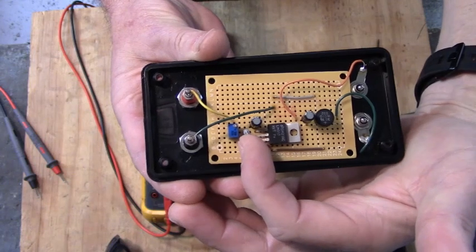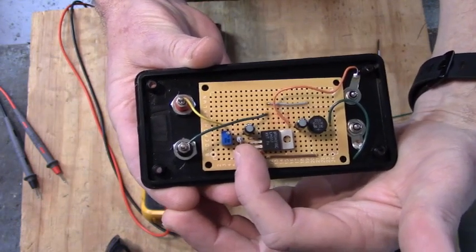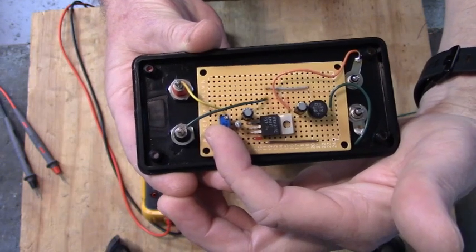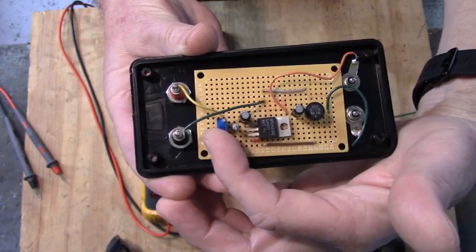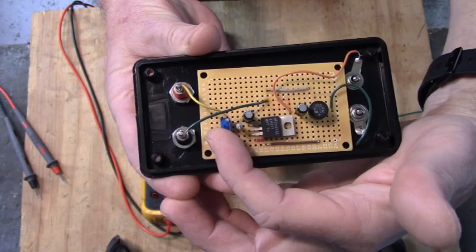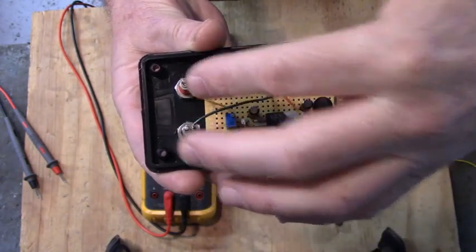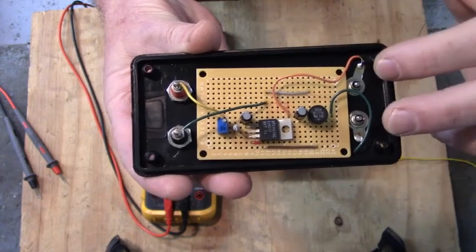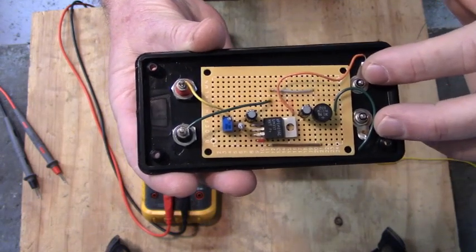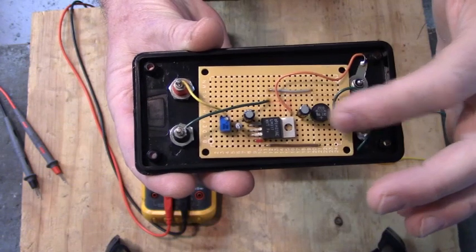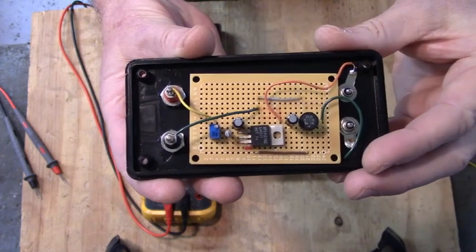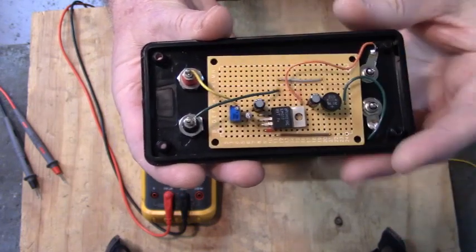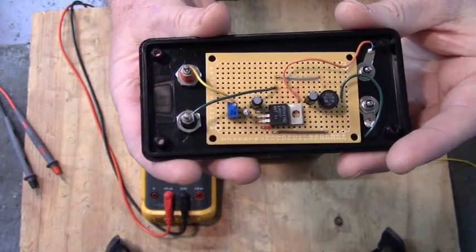Here's the 18 ohm resistor. Here's the 50 ohm multi-turn potentiometer that we're going to use to calibrate the current at the output terminals to 100 milliamps. Over here's the input terminals to the bridge rectifier. First thing we have to do is calibrate that current to 100 milliamps.